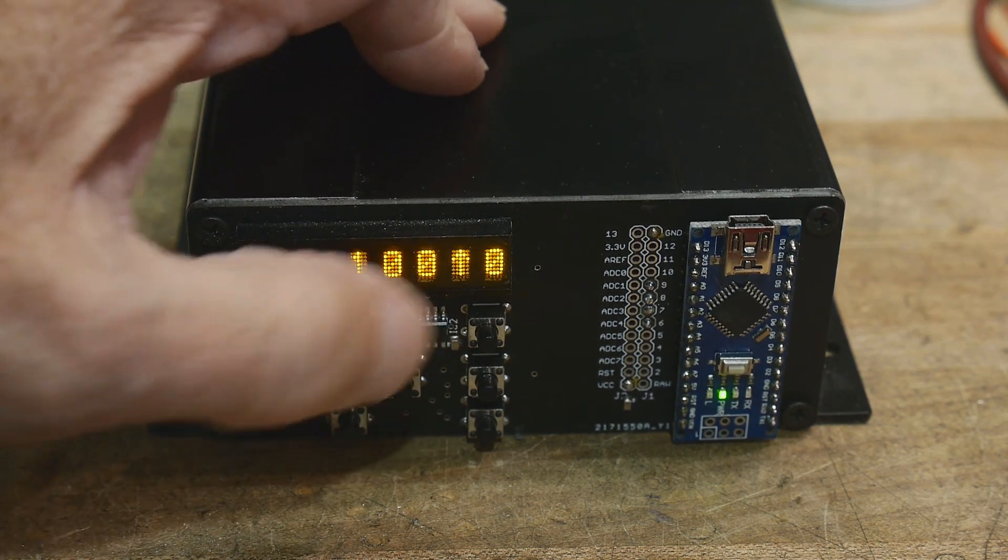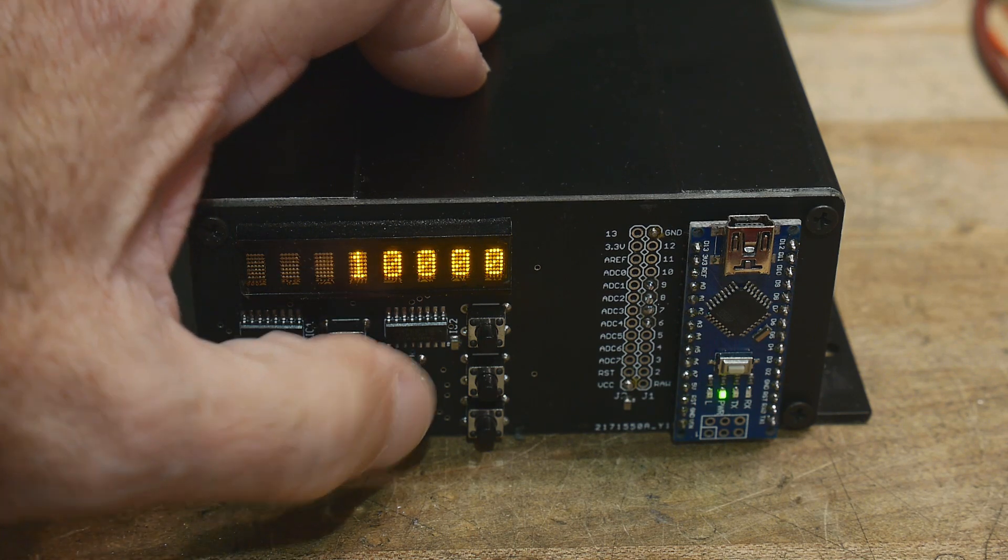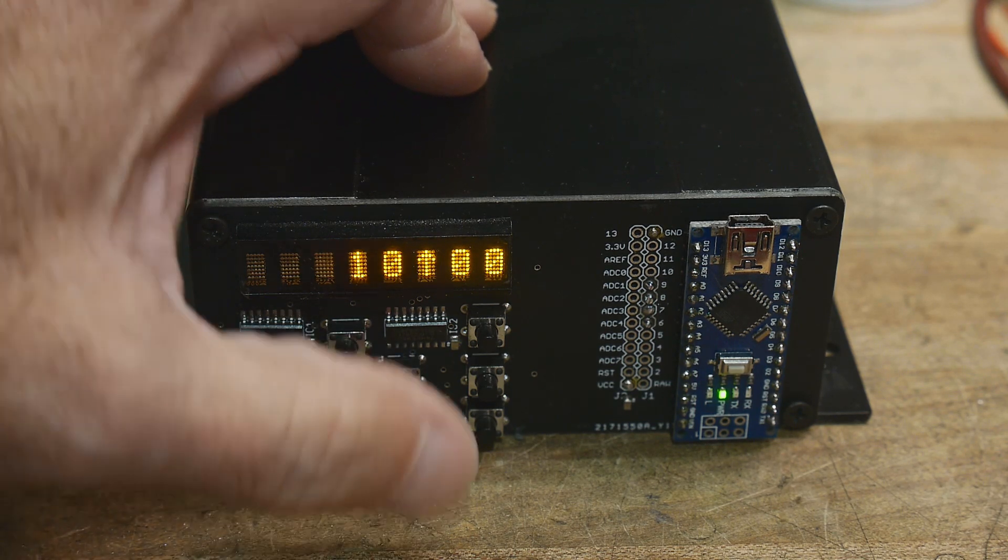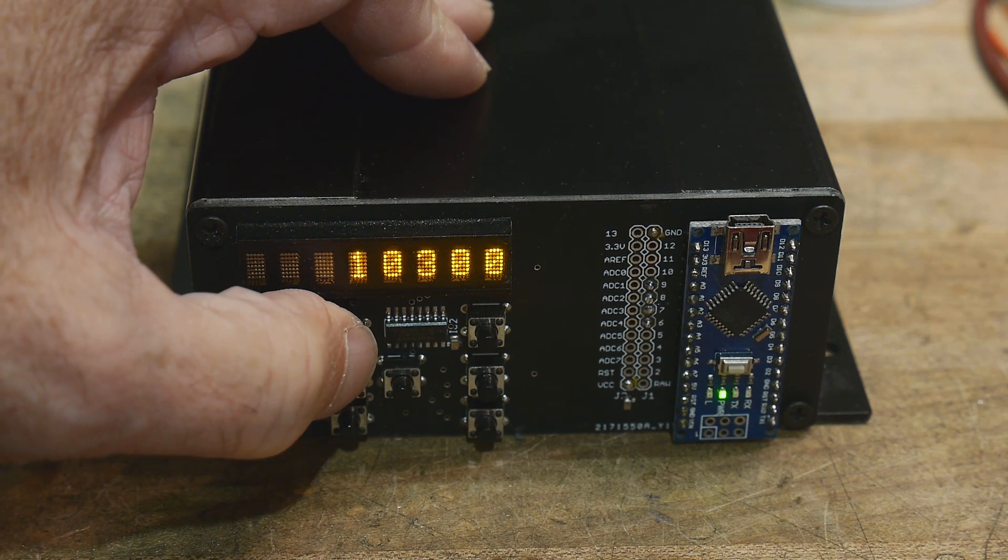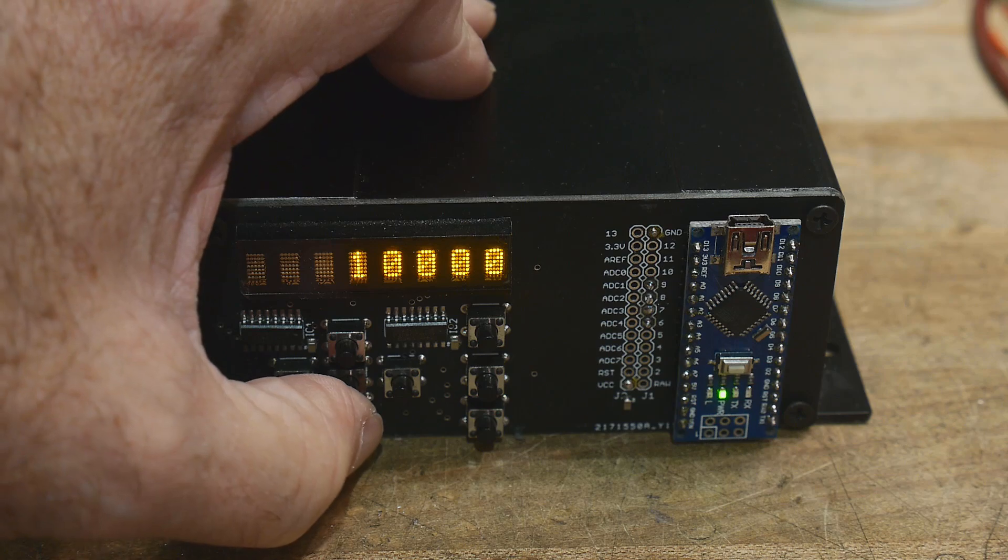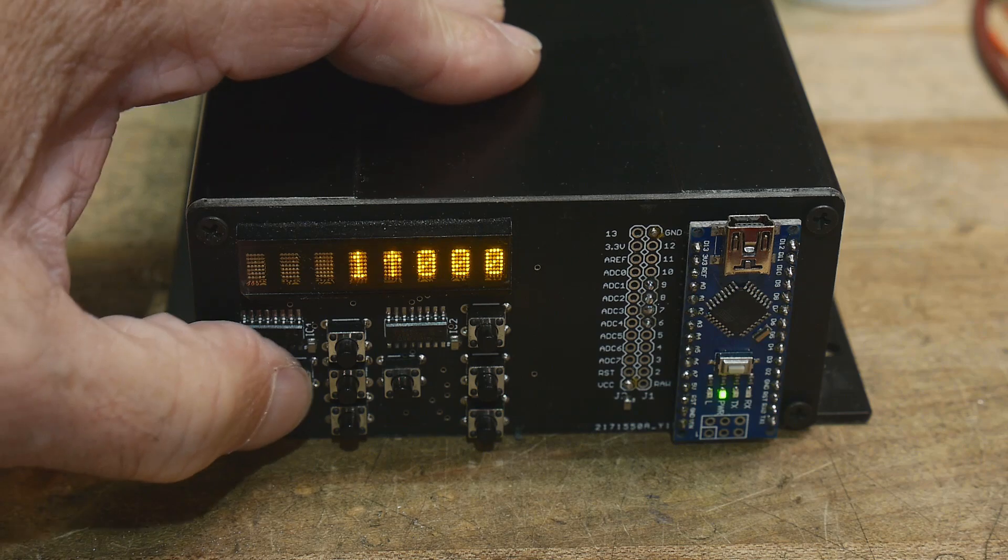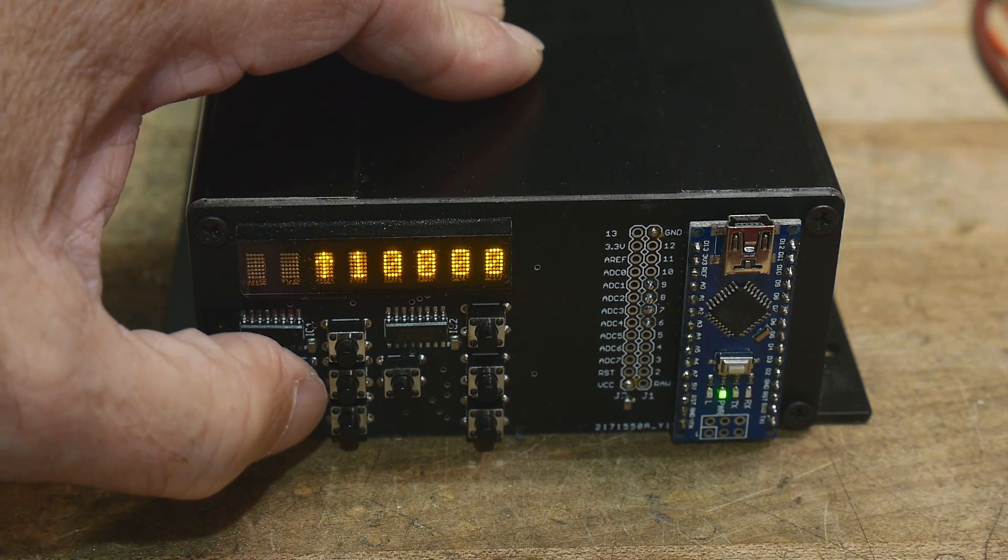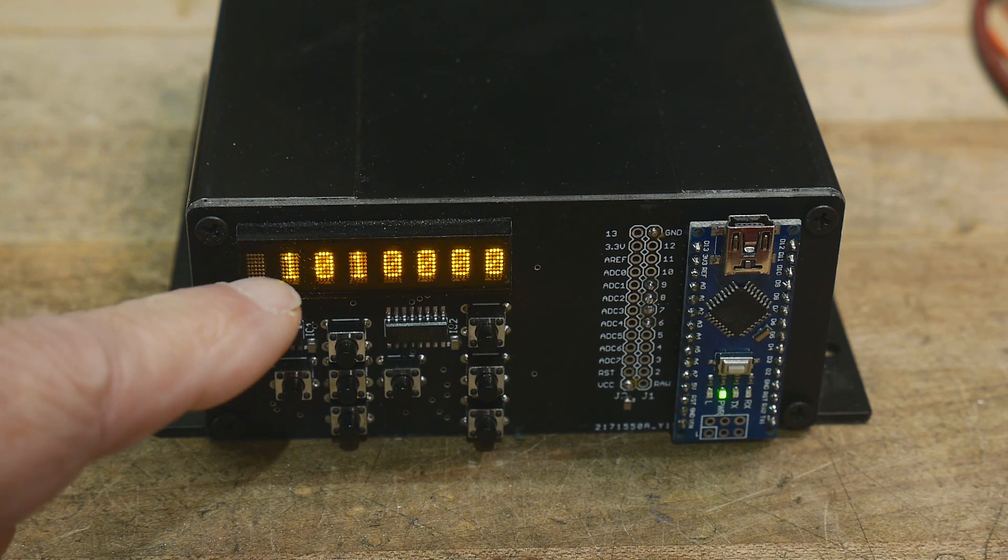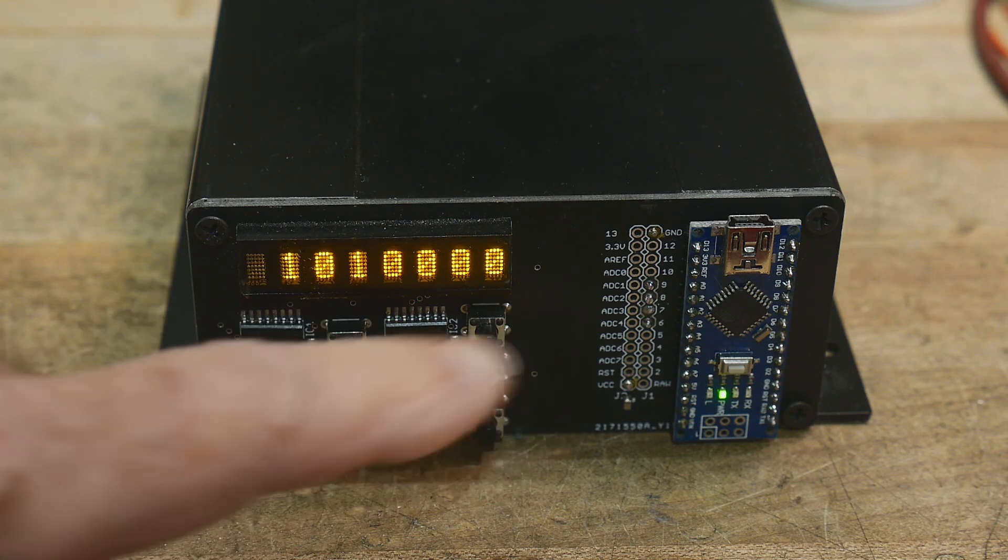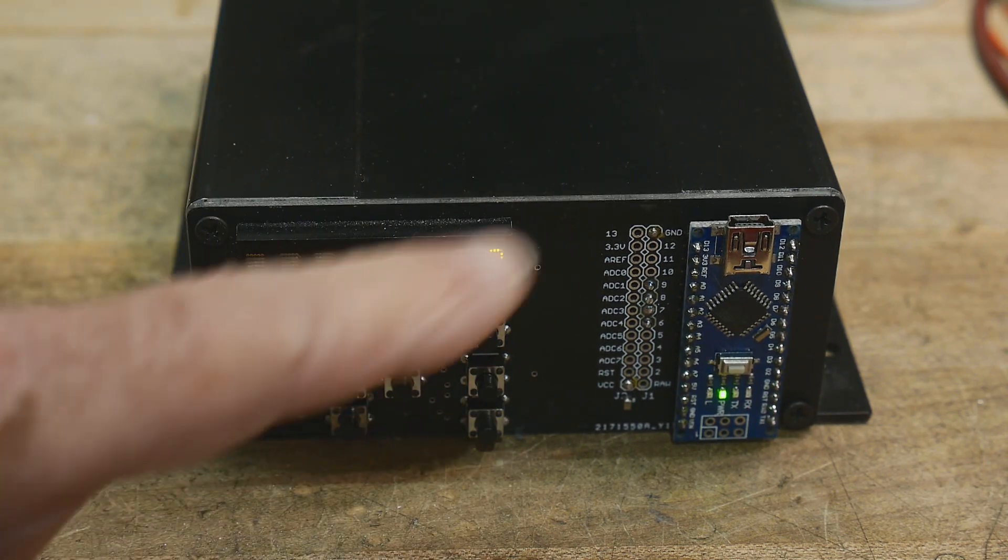As you arrow left and right, there's a little signal that tells you which digit you're going to be modifying. So we're going to be modifying the hundreds digit. And then we can count up and count down in the hundreds digit. And we can come over here even into blank space. And so now it's 1,000,000,000. So there's a button over the bottom that zeroes it.